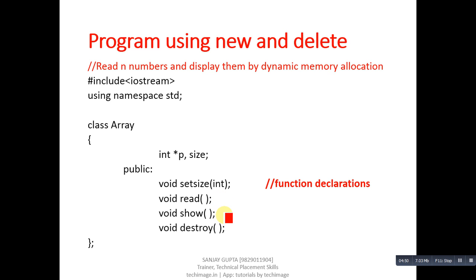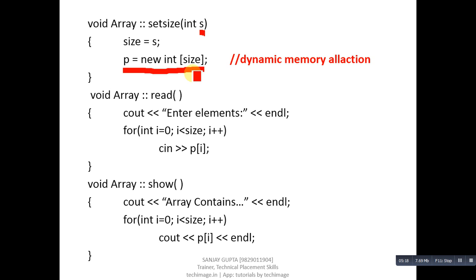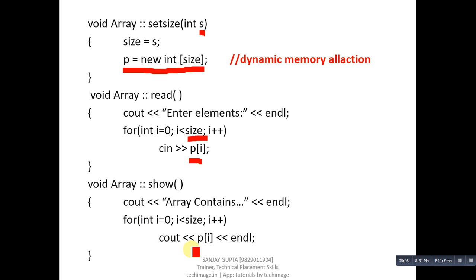The setSize function receives size in a parameter s, assigns s to size, then performs dynamic memory allocation using: p = new int[size] — where 'new' performs allocation, 'int' is the type, and 'size' is the quantity. The base address is received by pointer p. The read function uses a loop that repeats 'size' times — for example, if size is 5 it repeats 5 times — and each element is stored using p[i]. The show function is similar to read but uses cout to display elements using p[i].